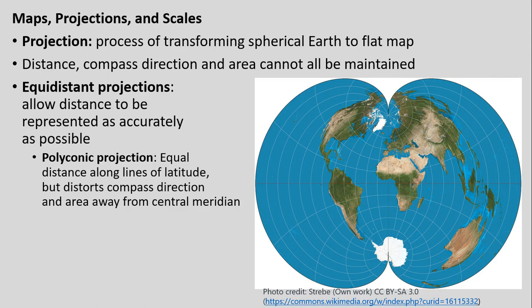With projections — this process of transforming the three-dimensional spherical earth to a flat map — we note that all the components we might want to represent from earth, mainly distance, compass direction (denoted by latitude and longitude as north/south/east/west), and land area, cannot all be maintained equally when transitioning to a world map. Usually you have to choose a type of map depending on what you want to maintain accuracy with, oftentimes sacrificing accuracy in other areas.